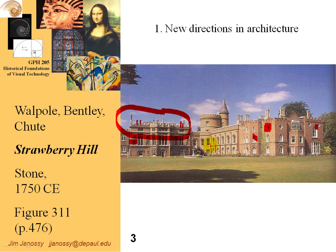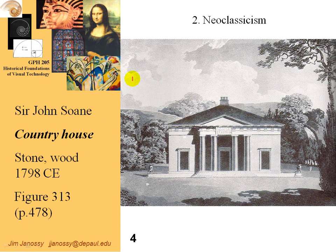As Gombrich points out, people began to think they might choose the style of their home the same way they would choose wallpaper. Another interesting phenomenon occurred about this time: certain elements of architecture that Palladio had documented in the Renaissance, thought to be key elements of Greek and Roman architecture, turned out to have been based on rather meager observations of buildings not truly representative of Greek and Roman architecture. When more original Greek structures were discovered and documented, a purified, simpler form emerged. You'll notice these Doric columns here — rather simple, with clean lines.